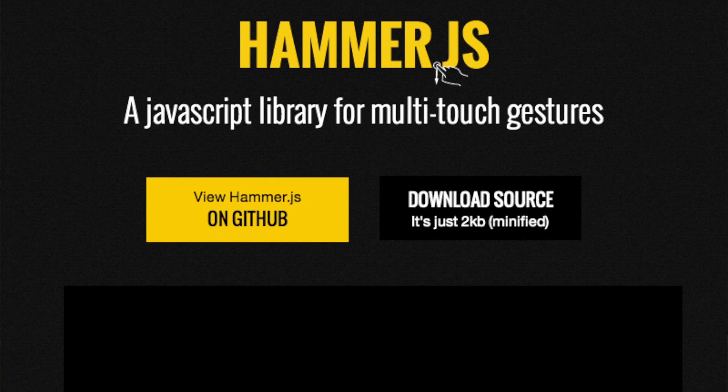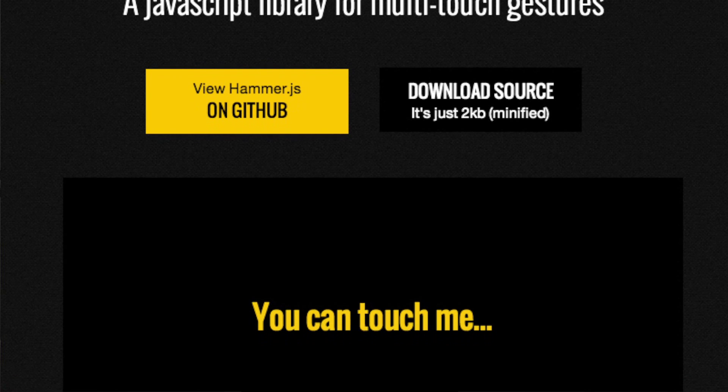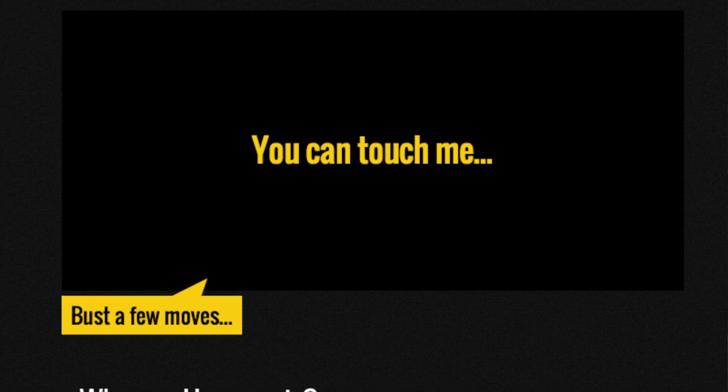So, talking about the implementation: Hammer.js comes as either a standalone library or a jQuery library. Those of you that are familiar with jQuery can implement it into your site and use jQuery functionality rather than just standalone functionality. It's really easy to implement. The script itself is actually only two kilobytes when it's minified, so there's very little load time and no overhead. It's a focused JavaScript library — it's only for touch and multi-touch gestures.